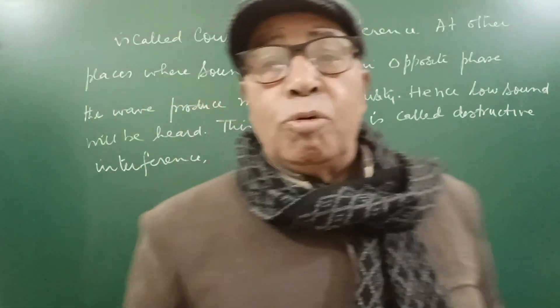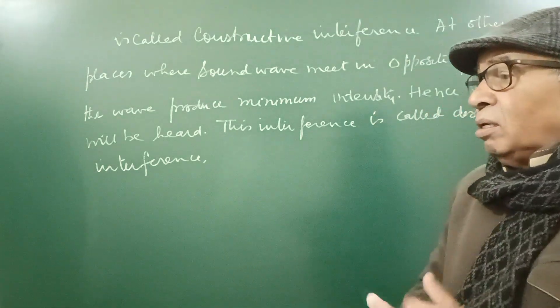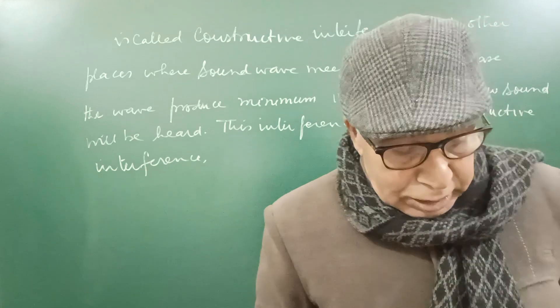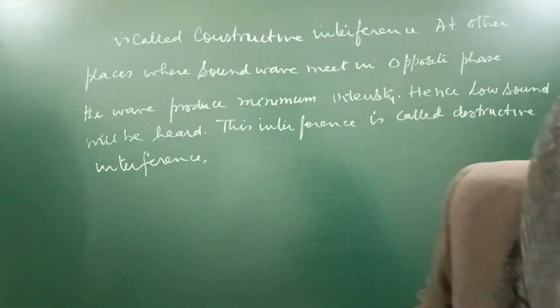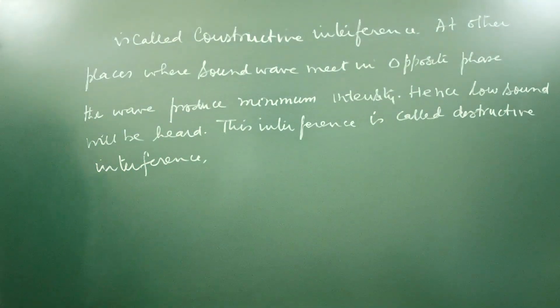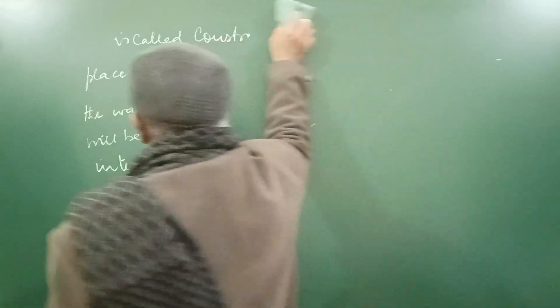Actually, same phase means opposite phase. If the displacement produced by two waves is in the same direction, then they are said to be in the same phase. You know, when two vectors are in the same direction, the vector sum will be maximum. And if they are in opposite directions, then the sum will be minimum. This was the definition of interference of sound waves: when two sound waves of the same frequency travel in the medium simultaneously in the same direction, they produce loud and low sound at different places, and the maximum remains as long as the two waves are travelling.